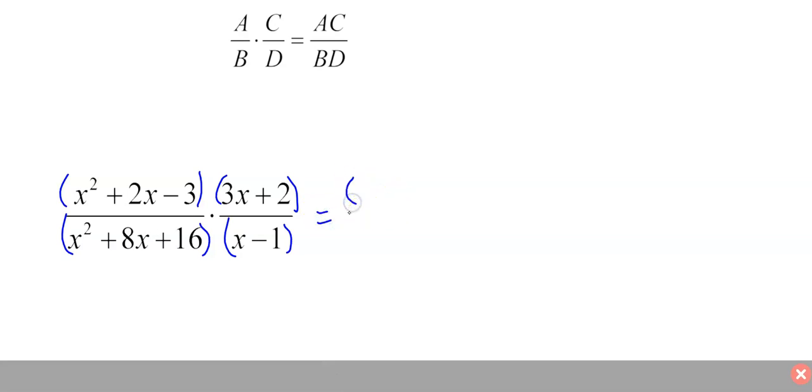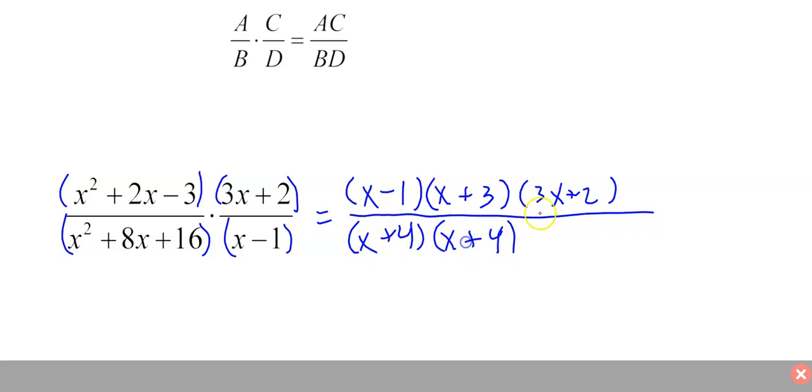So if I factor that first parentheses there on the top left, I think it does factor. This would be X and X, I think 3 and 1. Bigger number is positive, so that's negative. I think that works. And I don't think 3X plus 2 actually factors, I'm just going to leave that like that. And the first one on the left there, I think it factors X and X, I'm going to guess 4 and 4 plus and plus. And then X minus 1 doesn't really factor. You can see that this cancels. That's nice. That's really it.